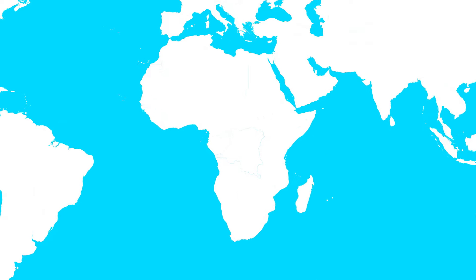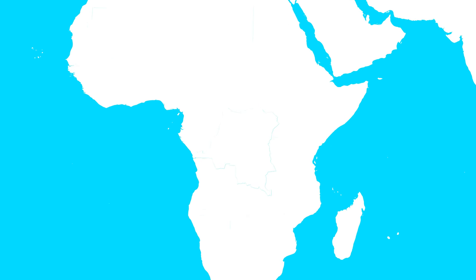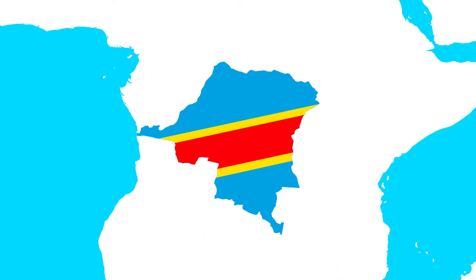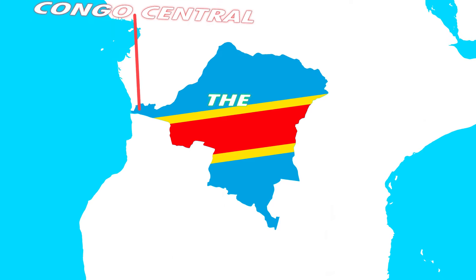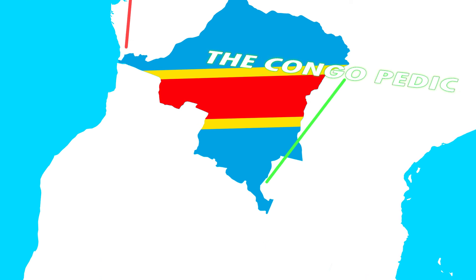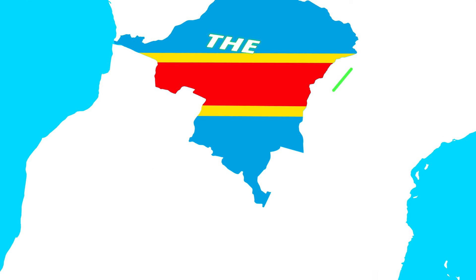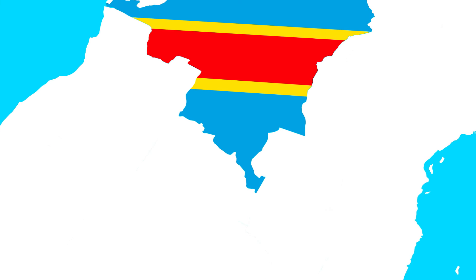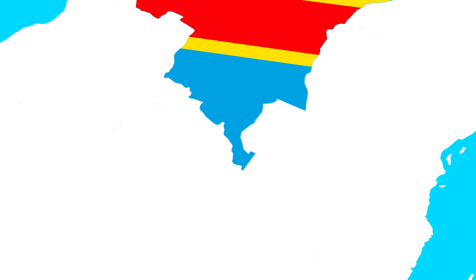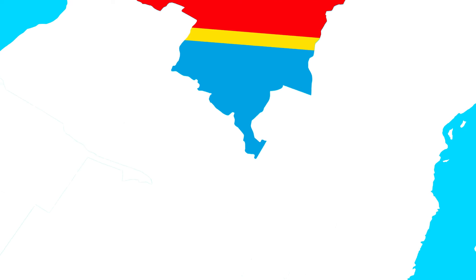Now we turn our attention to Africa, where colonial history has left its mark on the continent's borders. In the Democratic Republic of the Congo, there are not one but two panhandles: Congo Central and the Congo Pedicle. These border anomalies stem from disagreements between Belgian and British colonial authorities. The King of Italy intervened and drew a border that has remained in place to this day.